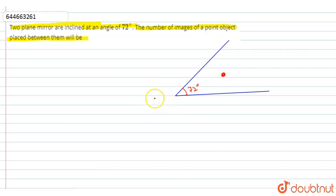So for the number of images, as we know, this is equal to 360 degrees divided by theta minus 1. So from here we can write